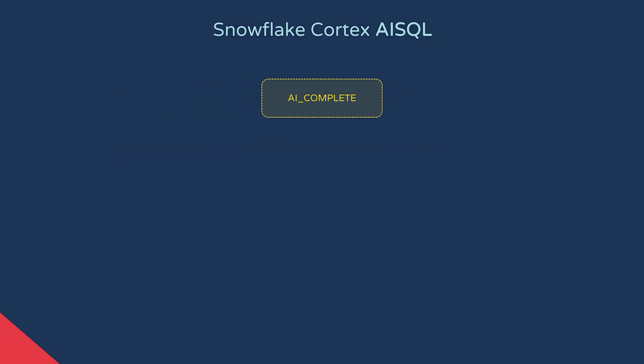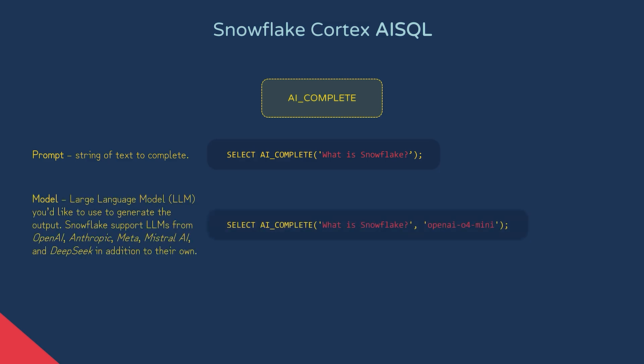AI_COMPLETE has two required input arguments. The first is a string we call the prompt — this is typically a question you'd like answered, but can be used in more creative ways. The second is a string specifying a model name, which is the LLM you would like to use to generate the output.